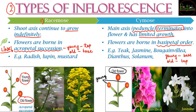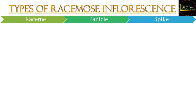Cymose inflorescence with basipetal order can be found in teak, jasmine, bougainvillea, dianthus, and solanum. You can observe bougainvillea or jasmine easily in your locality to understand cymose inflorescence in nature. Now we will see the different types of racimose inflorescence.